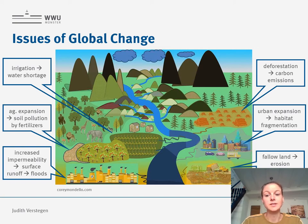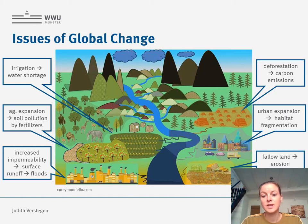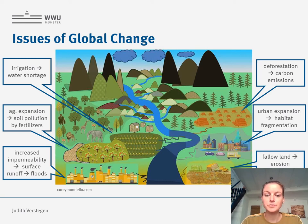Deforestation causes, among other things, carbon emissions which increases the greenhouse effect. Urban expansion may lead to habitat fragmentation and then loss of biodiversity. And also an increase in fallow land caused by land abandonment or mining can cause erosion.